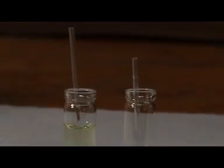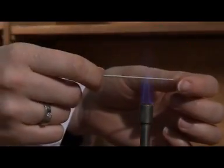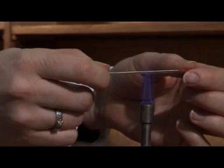First of all we need to make a TLC spotter. Heat the centre of a capillary tube in the blue cone of a microBunsen burner flame.